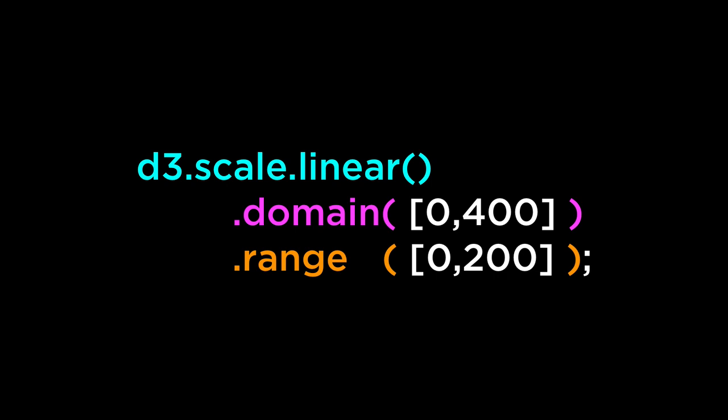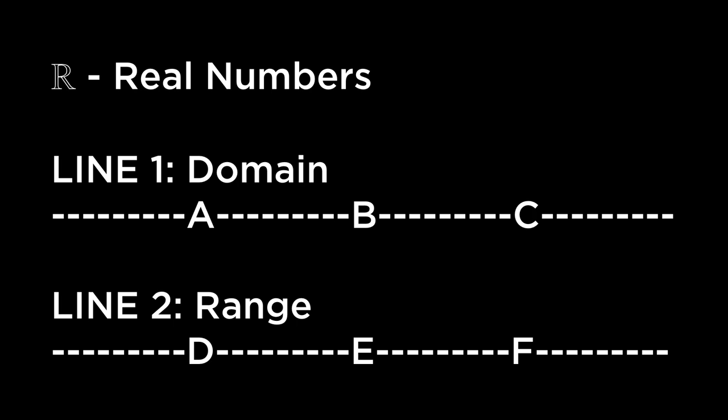The initial data is entered in the domain. What we want the data to be scaled to is put into the range. The domain takes in one array that contains two numbers — these numbers can be anything you want and should cover all the possible values of data you are using. The range also takes in one array with two numbers that should cover all possible values you want the data mapped to. The domain is line 1, the range is line 2. The range is the result of the y equals mx plus b transformation from line 1 to line 2.